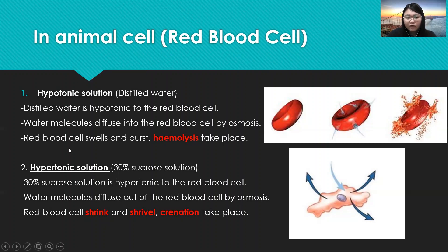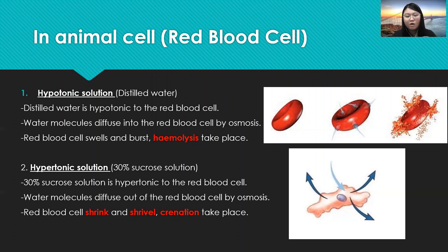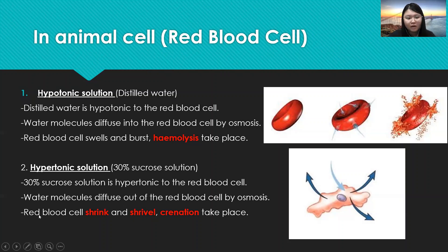If we put the red blood cell into a hypertonic solution — which is concentrated with less water, for example 30% sucrose solution — 30% sucrose solution is hypertonic to the red blood cell. The red blood cell has higher water molecule concentration, so water molecules will diffuse out from the red blood cell into the 30% sucrose solution by osmosis. The red blood cell will shrink and shrivel, and crenation takes place.